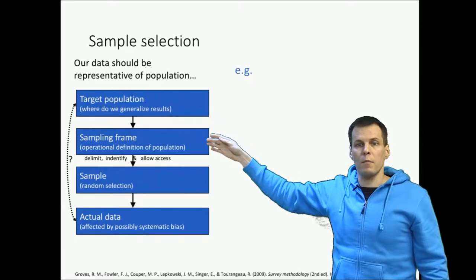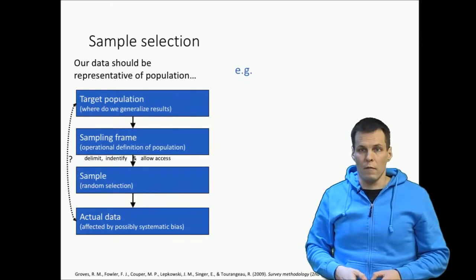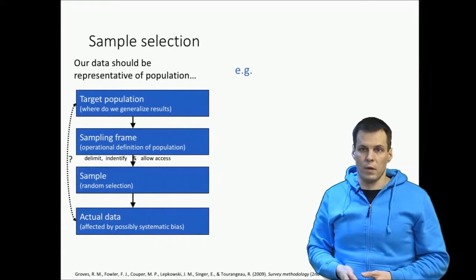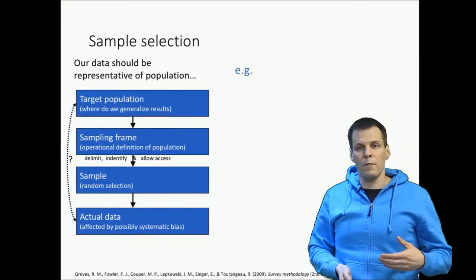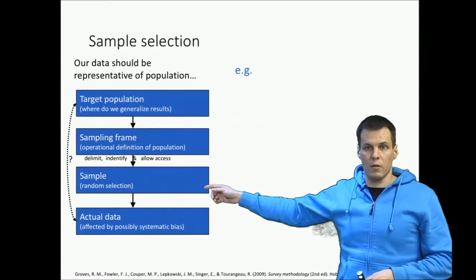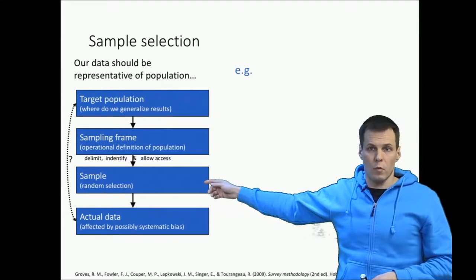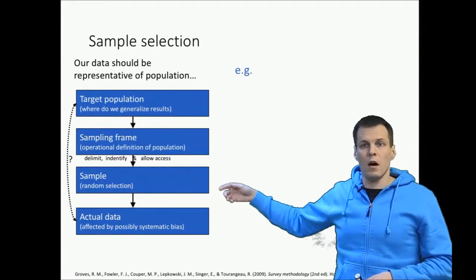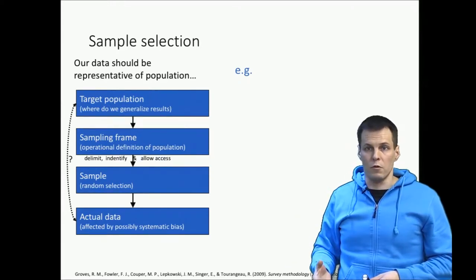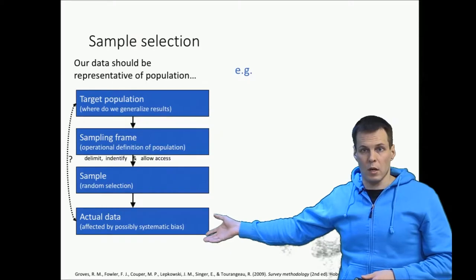From the sampling frame — if we are studying individuals in Finland, for example, the sampling frame could come from the population register and it could contain millions of people. So from the sampling frame we actually take the sample. Typically we choose people randomly. The random sample is the simplest way of taking a sample and it is often the most desirable way as well. Then we send out our survey and some people or companies choose to participate, others choose not to, so we get an actual data set that we can work with.